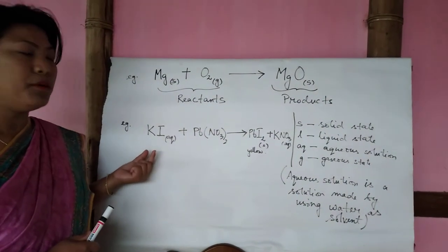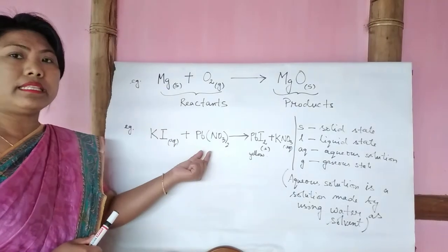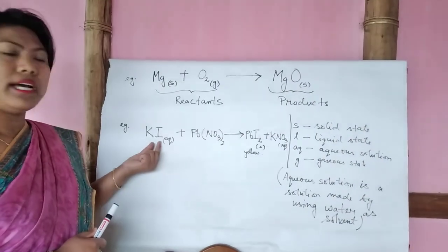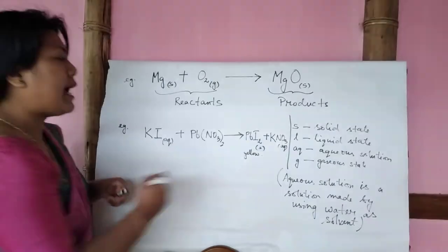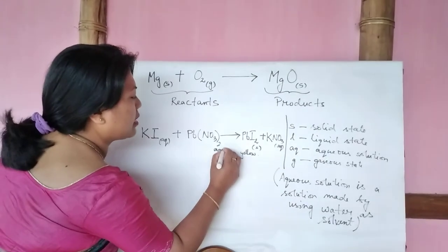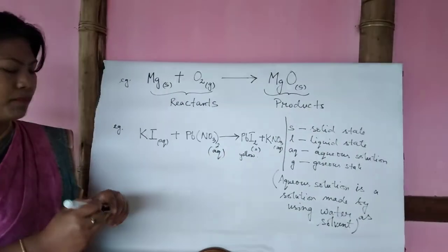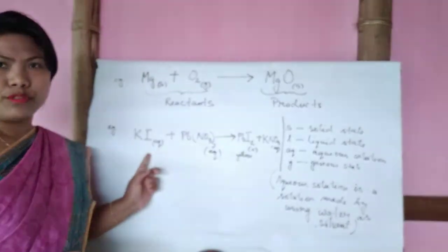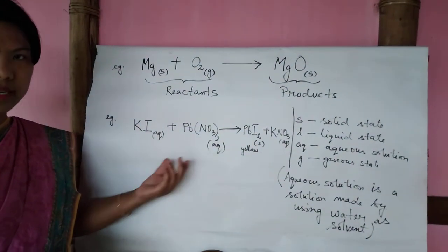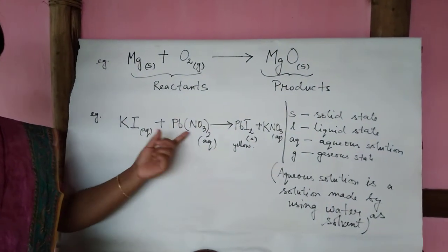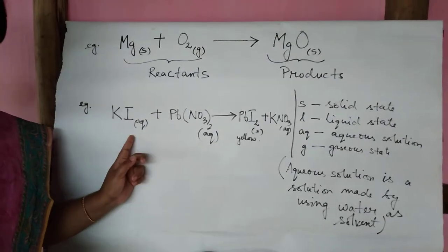And I am taking one more example, that is your Activity 1.2, potassium iodide and lead nitrate. So potassium iodide, you are taking aqueous solution, and lead nitrate also, you are taking aqueous solution. Both of them are colorless solution. They have no color at earlier, that is in the reactant forms. These two are reactants.